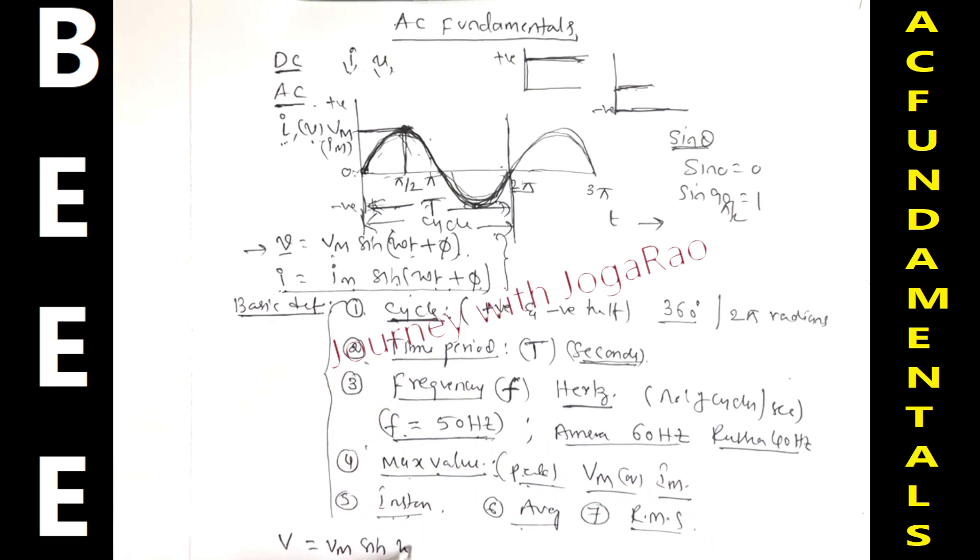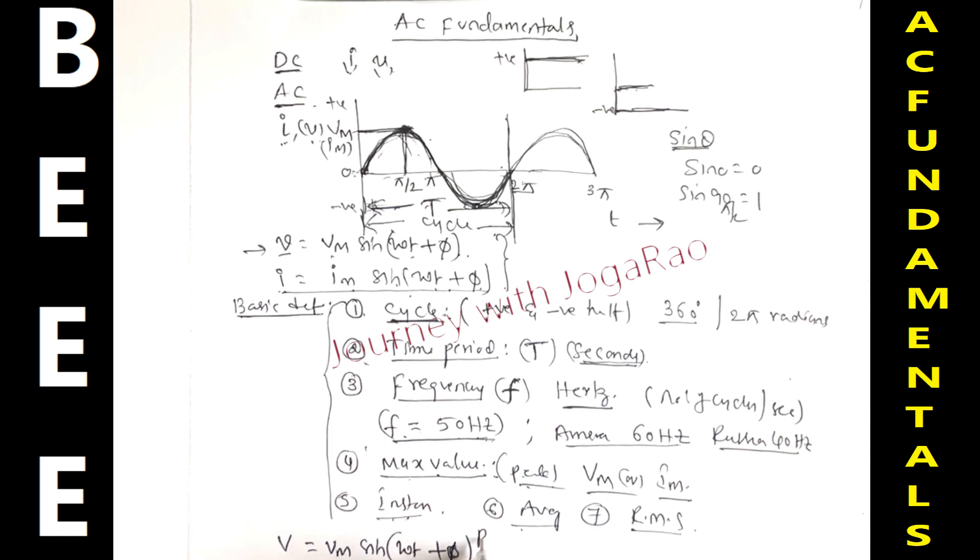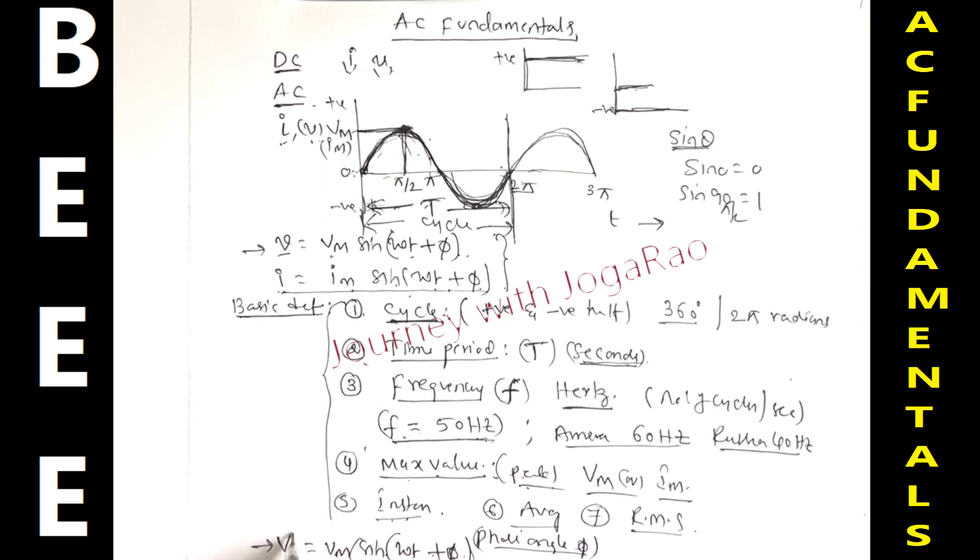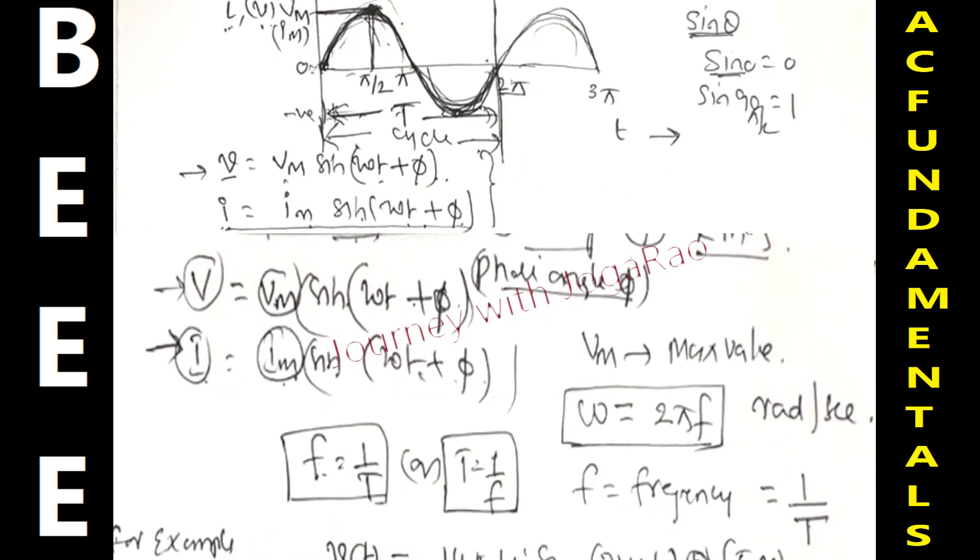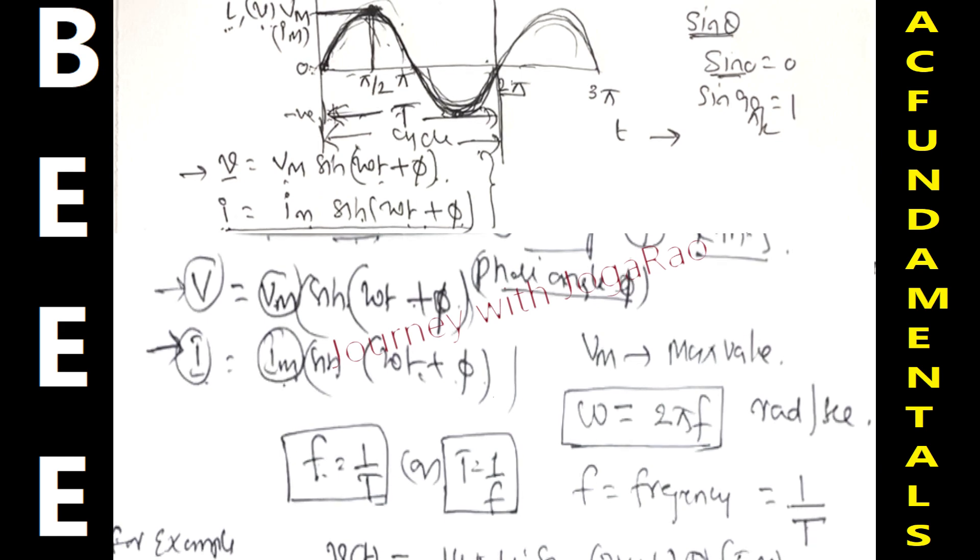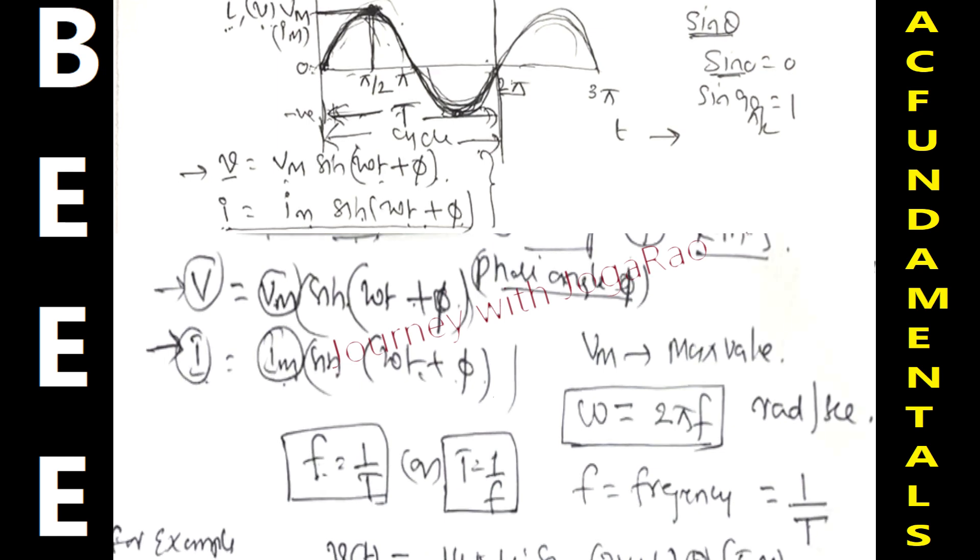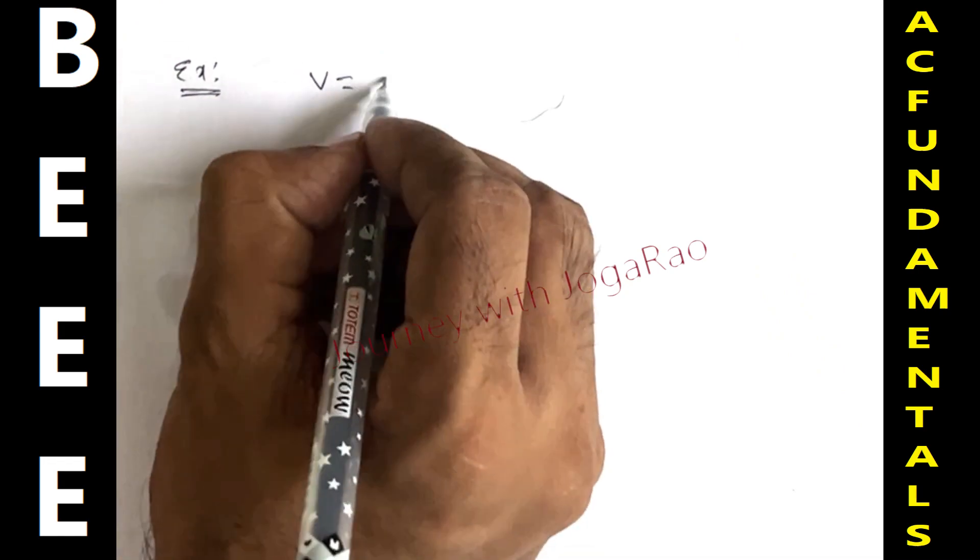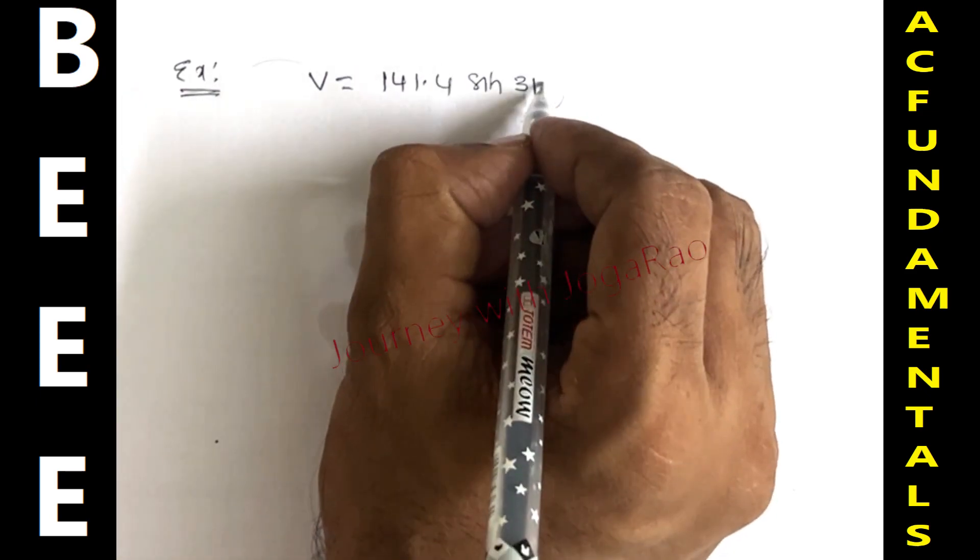Next, the relations: V is equal to Vm sin omega t plus phi, where phi is the phase angle. I is equal to IM sin omega t plus phi. The nature is sin, but voltage has voltage magnitude, current has current magnitude. Vm is the maximum value. Omega is equal to 2 pi f, measured in radians per second. F is equal to frequency, 1 by T, the reciprocal of time period. T is equal to 1 by f. For example, let's solve a problem.